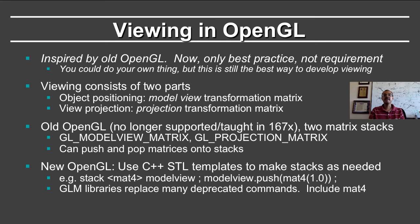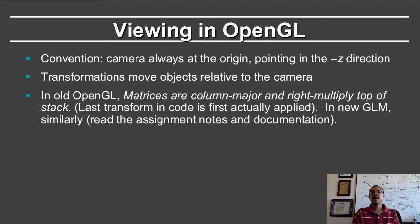The glm library includes 4x4 matrices, or MAT4. The camera is assumed to always be at the origin, pointing in the minus Z direction. Of course, this does not mean you cannot define your camera in world coordinates as somewhere else, pointing at some interesting location in the scene. But the model view transformation matrix will transform the scene so that effectively the camera is at the origin, pointing down the minus Z axis. Conceptually, the objects are moved relative to this camera, which is always at the origin. Therefore, the model view transformation acts on objects.